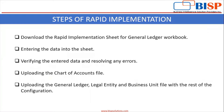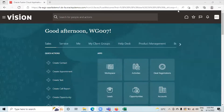Steps of rapid implementation: first, download the rapid implementation sheet for the general ledger workbook. Second, enter the data into the sheet. Third, verify the entered data and resolve any errors. Fourth, upload the chart of accounts file. Fifth, upload the general ledger, legal entity, and business unit file with the rest of the configuration. Now we will see practically how to perform this task in Oracle Fusion.